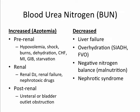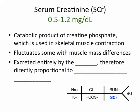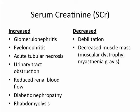Creatinine is the catabolic product of creatine phosphate, which is used in skeletal muscle contraction. An individual's serum creatinine will fluctuate some with muscle mass differences. Because creatinine is excreted entirely by the kidneys, it is directly proportional to renal excretory function. Therefore only conditions affecting the kidneys will increase serum creatinine. With decreased muscle mass or debilitation, serum creatinine may be decreased.